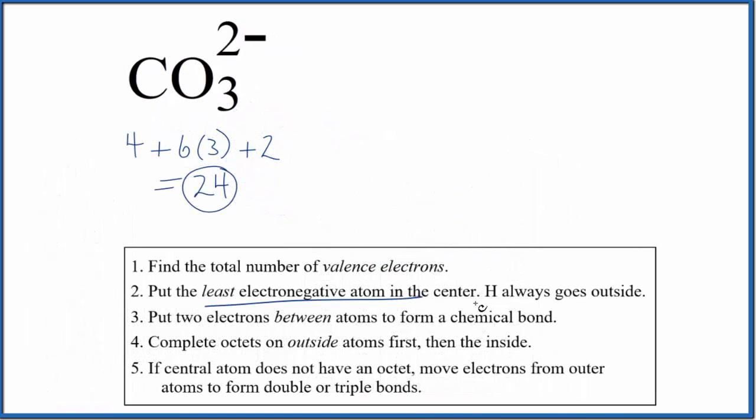We'll put the least electronegative atom at the center of our Lewis structure. That's going to be the carbon. So we'll put our carbon right here, and then we'll put 3 oxygen atoms around it.